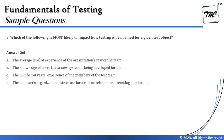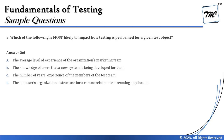The next question is question number five: which of the following is most likely to impact how testing is performed for a given test object? This sounds a little tricky because 'how testing is performed' could have a variety of options, requiring very close attention before concluding with the right answer. Option A says the average level of experience of the organization's marketing team — the marketing team doesn't determine how to test the system, so we can rule this out.